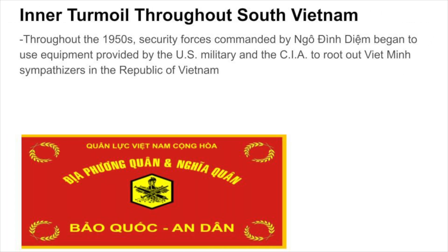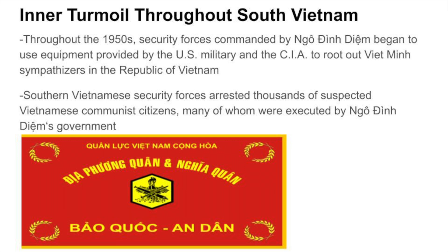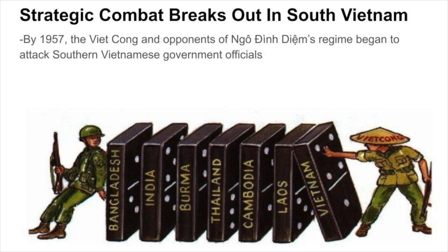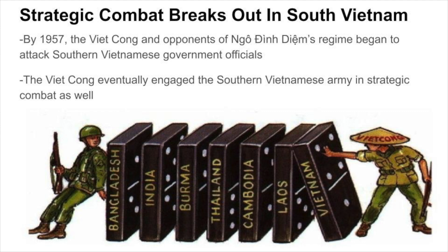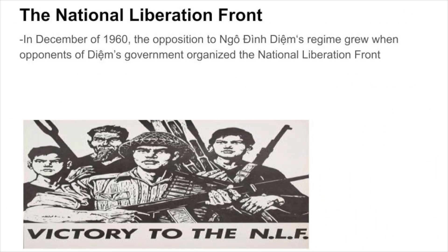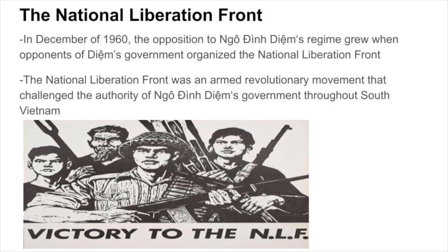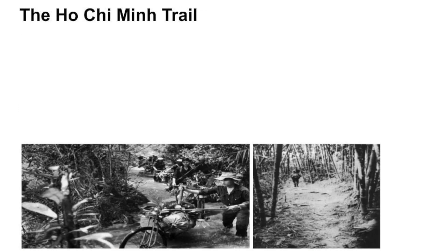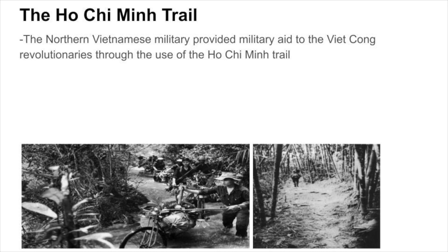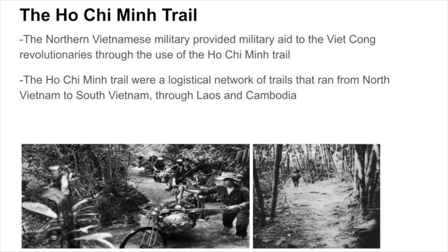Throughout the 1950s, security forces commanded by Goh Dinh Diem used equipment provided by the U.S. military and the CIA to root out Viet Minh sympathizers, arresting thousands of suspected Vietnamese communist citizens, many of whom were executed. By 1957, the Viet Cong and opponents of Diem's regime began to attack Southern Vietnamese government officials, eventually engaging the Southern Vietnamese army in strategic combat. In December of 1960, opponents organized the National Liberation Front, an armed revolutionary movement that challenged Diem's authority throughout South Vietnam. The Northern Vietnamese military provided aid to Viet Cong revolutionaries through the Ho Chi Minh Trail, a logistical network running from North Vietnam through Laos and Cambodia.